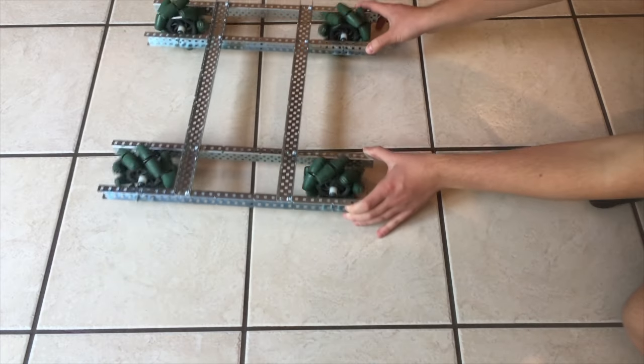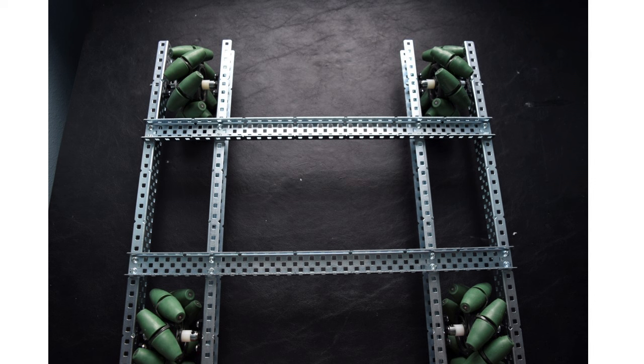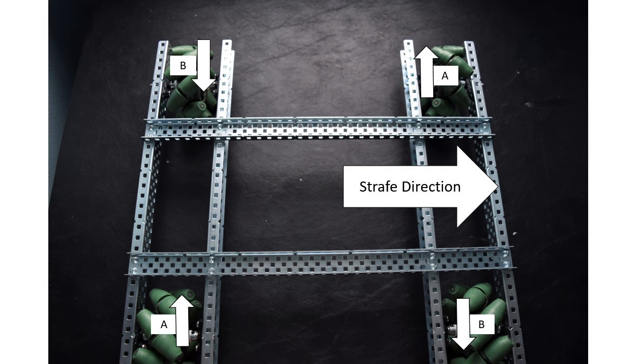With mecanum wheels you want to set each pair at opposite corners, so that your front two wheels are either pointing towards or away from each other, and the opposite for the back wheels. Let's call these two wheels the A wheels and these two wheels the B wheels. When you turn the A wheels forward and the B wheels in reverse, you strafe to the right.